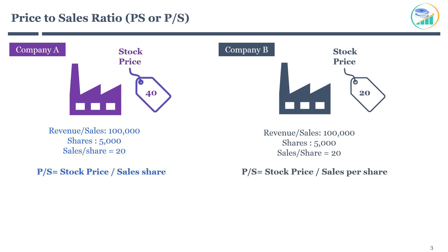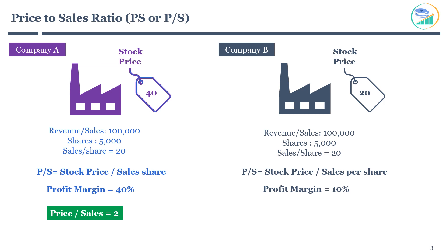Before evaluating price-to-sales, let's assume Company A has a net profit margin of 40%, whereas Company B has a net profit margin of 10%. Company A is currently trading at 40 with sales per share of 20, giving a price-to-sales of 2. Company B is currently trading at 20 with sales per share of 20, giving a price-to-sales of 1.